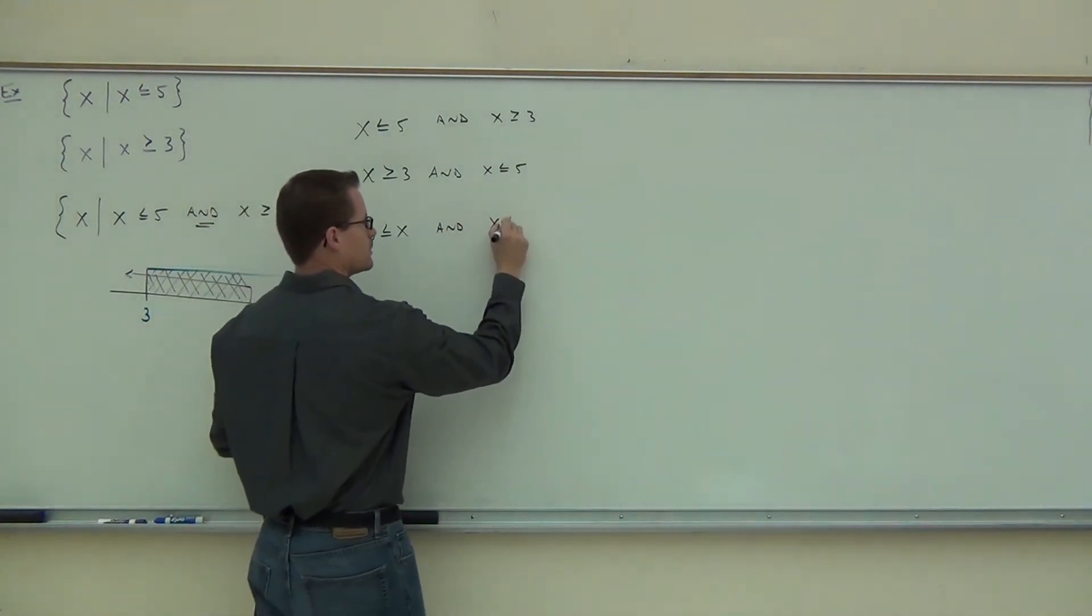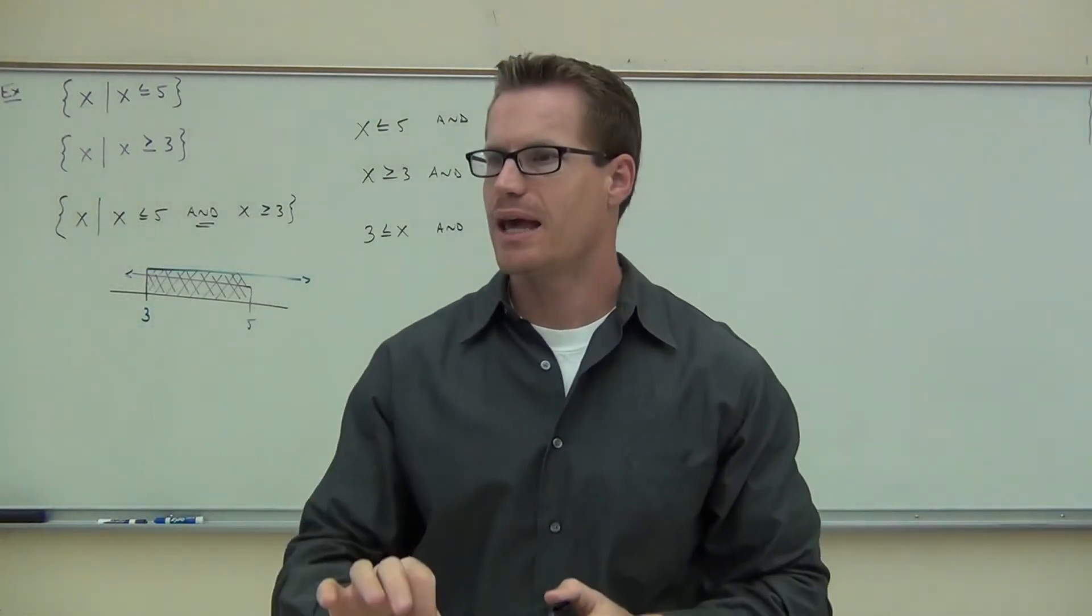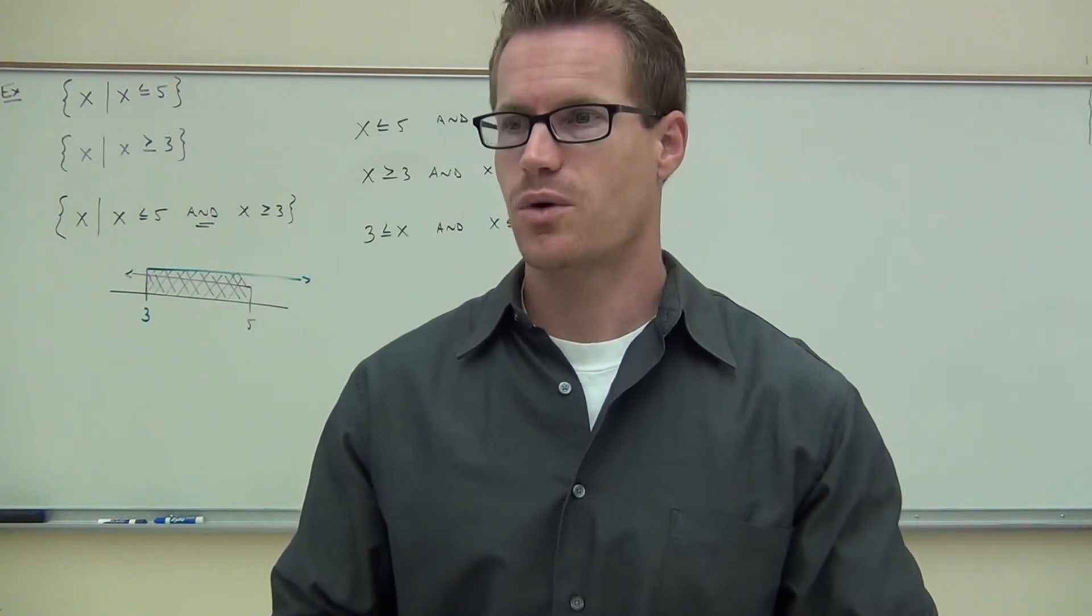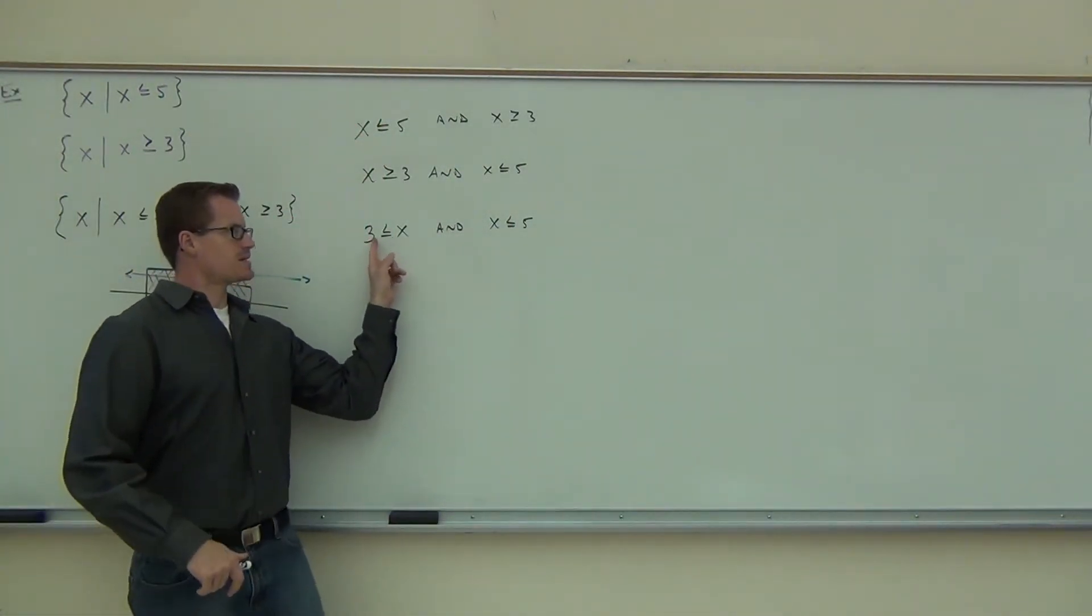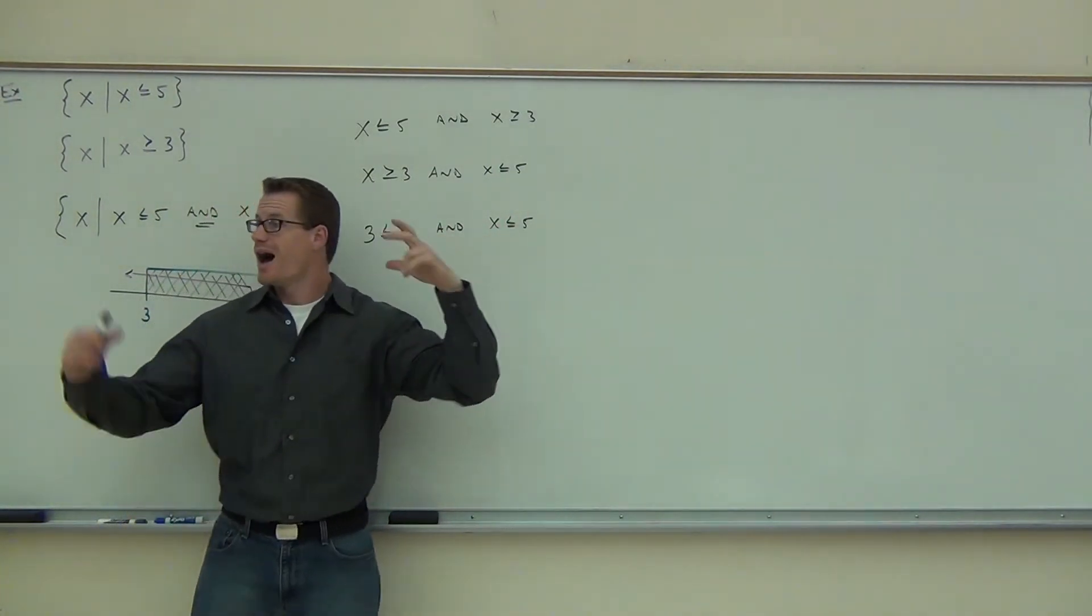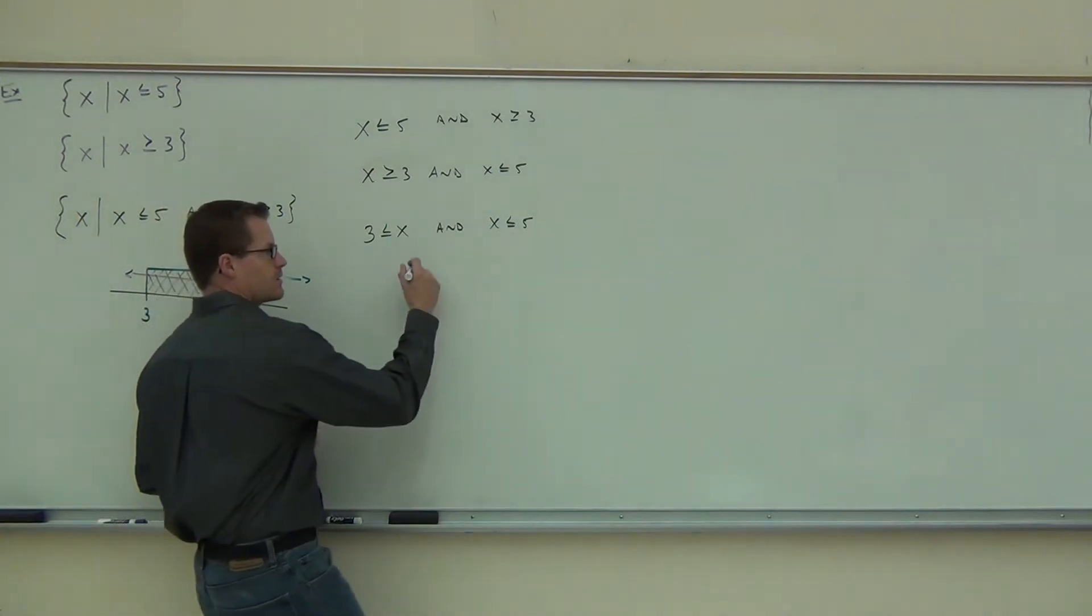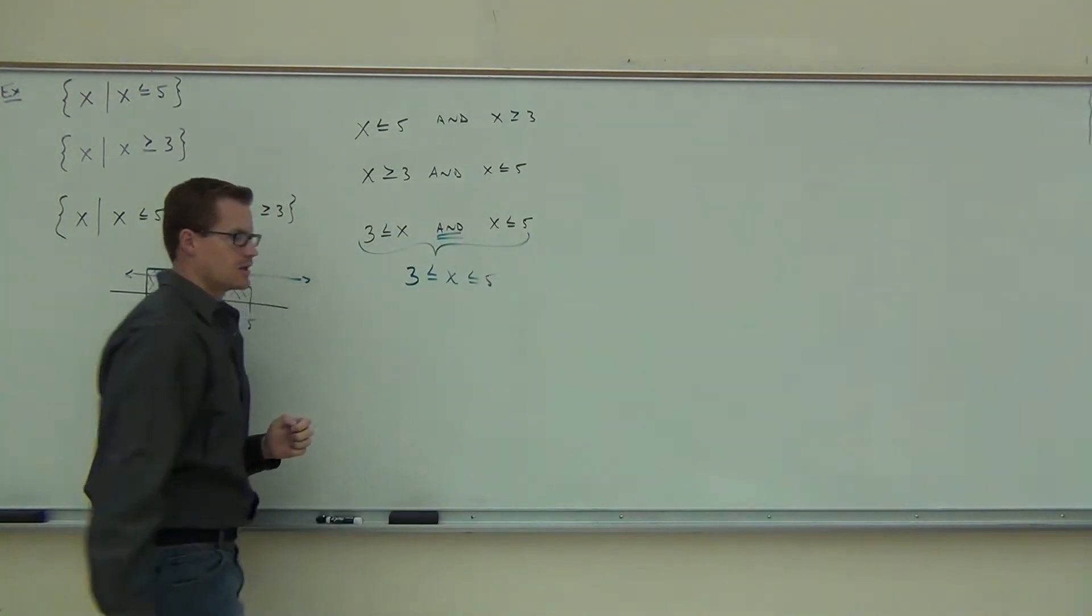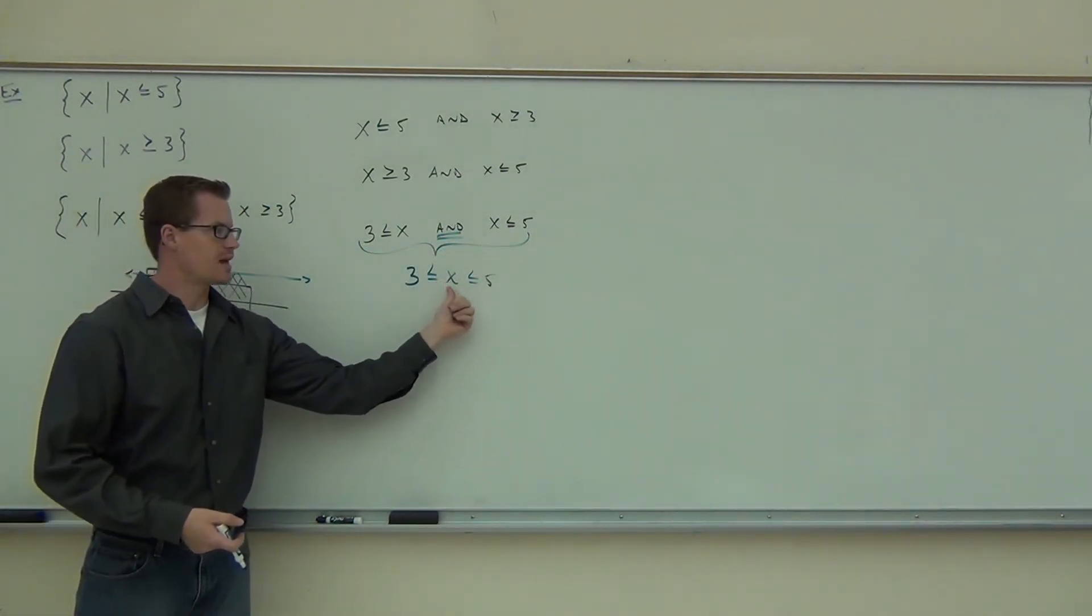Now, I want you to notice something. This is kind of cool. You can do this only with the and inequality. We're going to talk about or inequalities in a little while. Can you do this with the or inequality? Everyone shake your head. No. Can you do it with the and? Yes. Can you do it with the or? No. But we can put and together. Watch. If x is, I'm sorry, if 3 is less than x and at the same time x is less than 5. Look at that. 3 is less than x, but x is also less than 5. I can match those together. Look. 3 less than x, x less than 5. This can make 3 less than x less than 5. You can do that with an and inequality. 3 is less than x. x is also less than 5. I match them together. 3 is less than x is less than 5.